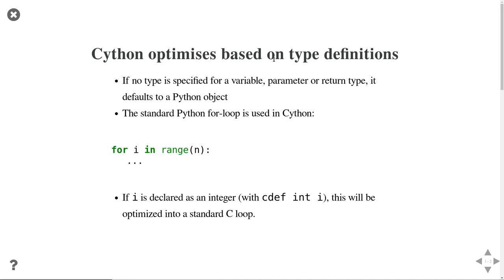If you want to write a loop, you just implement the standard loop — for example, 'for i in range(n)' to loop from 0 to n-1. But if the index i has no specified type, you will just run a normal Python loop. However, if you declare the type of i beforehand using 'cdef int i', specifically making i an integer, then this loop will optimize into a standard C loop and will be a lot faster. These are the types of optimizations Cython enables.